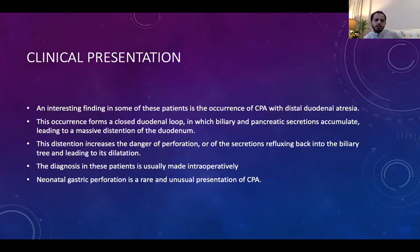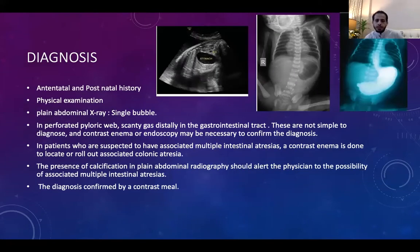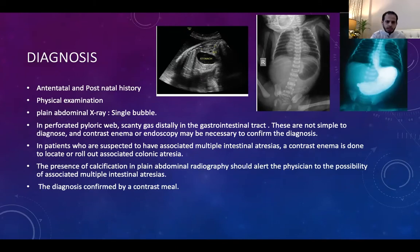Atresia can occur at any level from mouth to rectum. An interesting presentation is pyloric atresia with distal duodenal atresia, creating a closed loop where pancreatic and biliary secretions accumulate, potentially causing massive duodenal distension, perforation, or reflux into the biliary system. Neonatal gastric perforation can be a presentation. Diagnosis is made by antenatal and postnatal history of polyhydramnios and single gastric bubble on imaging. Upper abdominal distension on physical examination raises suspicion. X-ray showing a single gastric bubble is the first diagnostic modality, confirmed by contrast study.